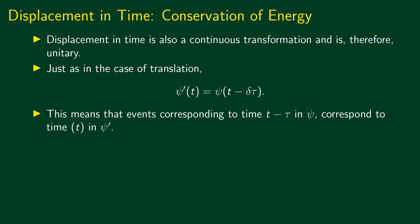Displacement in time, just like displacement in space, is a continuous transformation and therefore it has to be a unitary transformation, because all continuous transformations are also unitary transformations. In time translation, what we are doing is that the system at time t is simply being translated to a time t plus delta tau, or the system at time t minus delta tau is being translated to a time t.